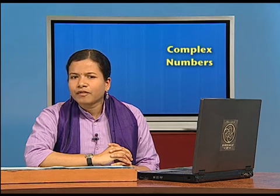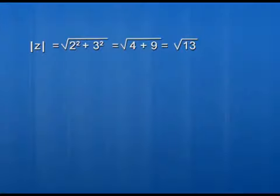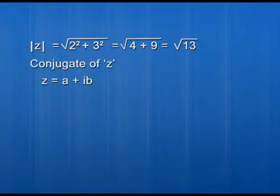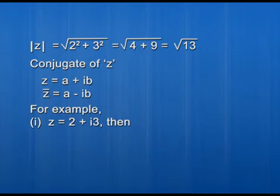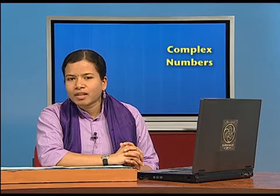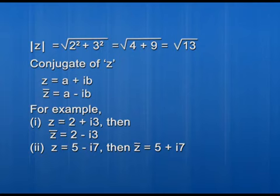We will also see how to calculate the conjugate of a complex number. Suppose z equals a plus ib. To find the conjugate of z, we keep the number the same but change the sign. The conjugate of z, denoted by z-bar, is a minus ib — the real part stays the same but the sign of the imaginary part is changed. For example, if z equals 2 plus i3, the conjugate is 2 minus i3. If z equals 5 minus i7, the conjugate is 5 plus i7.